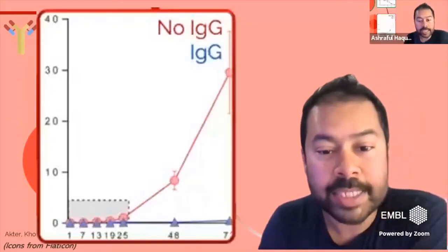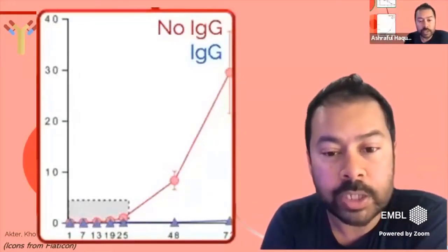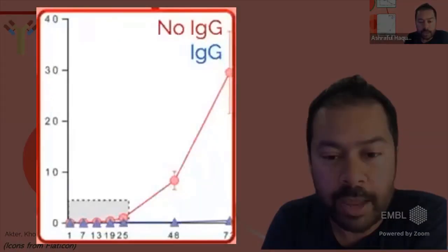But of course you can see that the IgG has a clear role in preventing new infections in the graph I'm showing you here on the left.